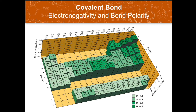We can see here the electronegativity values of the elements. The electronegativity values range from 0 to 4, and the higher the value, the more electronegative an atom is and the more it is attracted to the electrons in a bond. Looking at the periodic table, electronegativity increases across a period and decreases down a column. Thus, nonmetals tend to have high electronegativity values compared to metals.